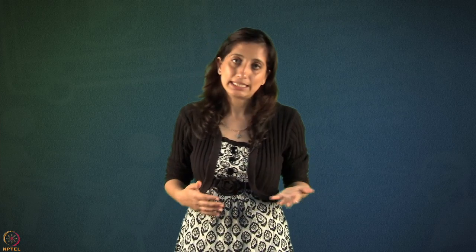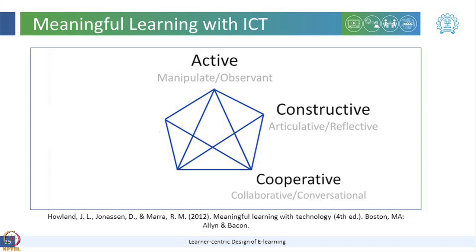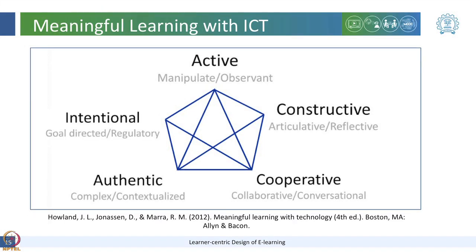Coming back to learning with ICT, Howlett and his team in 2012 proposed five dimensions that characterized how ICT could support meaningful learning. These five dimensions included: active learning, where learners actively engage with ICT content; constructive learning, where learners construct their own knowledge through self-reflection and articulation; cooperative learning, where learners work with peers; authentic learning, where learners engage in solving real-world problems; and goal-oriented learning, where learners set their learning goals and plan their learning pathways.